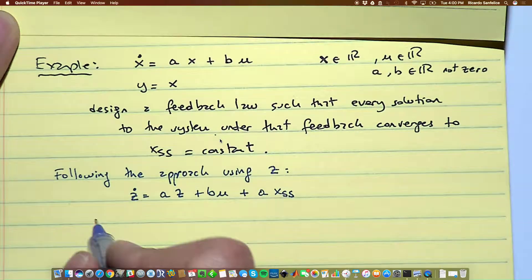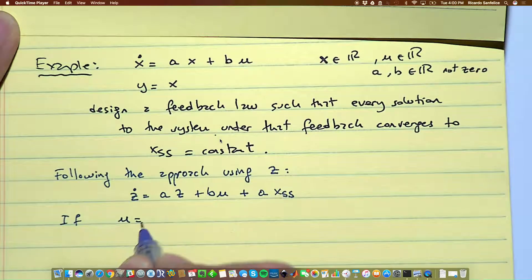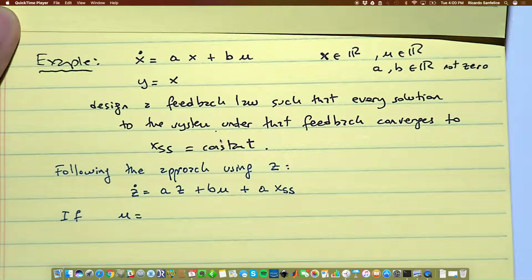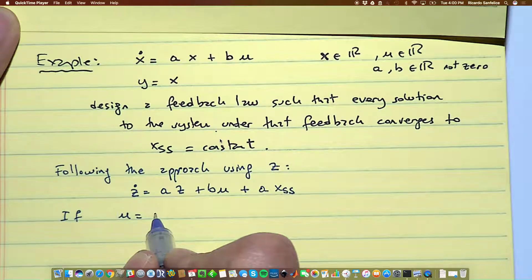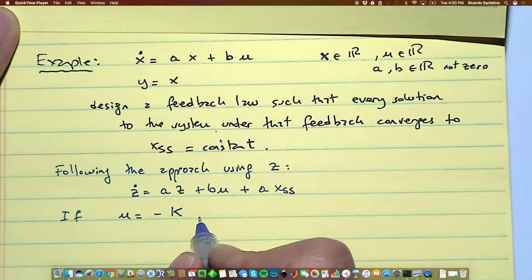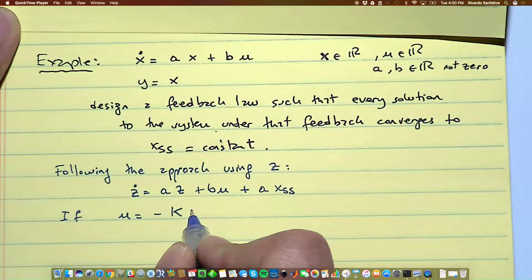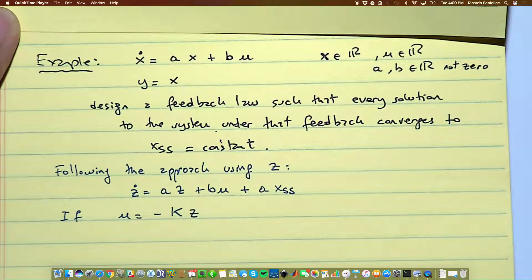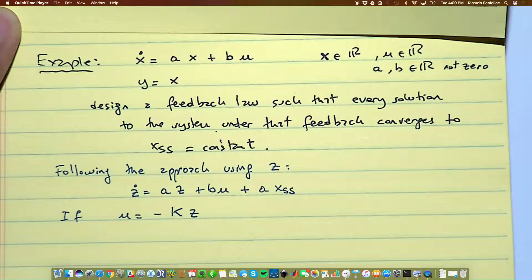So if we apply an input u which according to what we expect is minus k times z for this system, if someone gives you this system and all you know is minus k times the state and the state is z now, you just apply this.